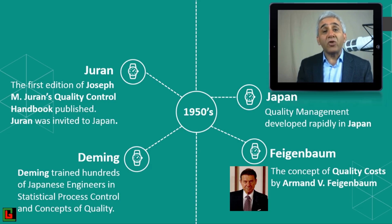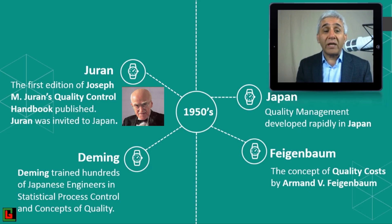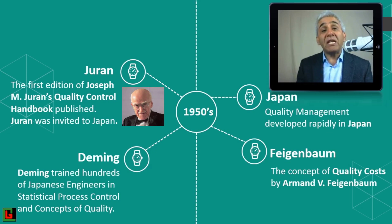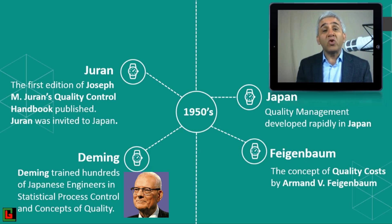Dr. Joseph Juran published his first quality control handbook in 1951 and was invited to Japan along with many other quality gurus. Deming was also there during that time. Deming trained hundreds of Japanese engineers — he was a statistician who introduced the concept of statistical quality to Japan, teaching that concept to hundreds of quality engineers.